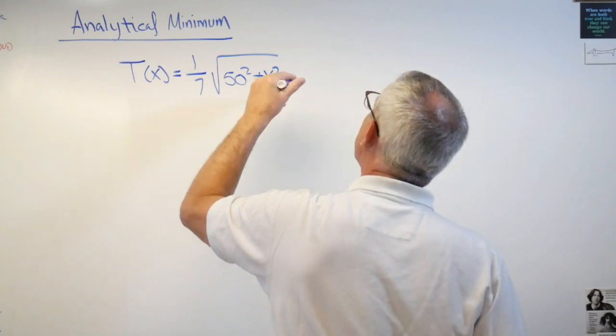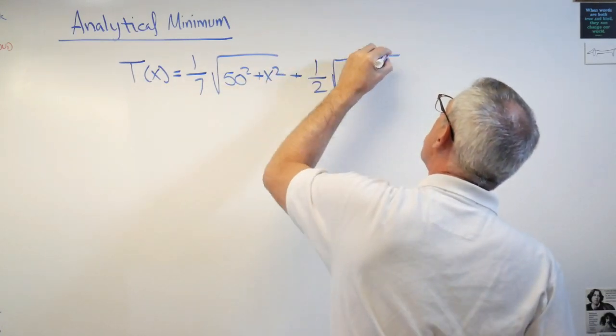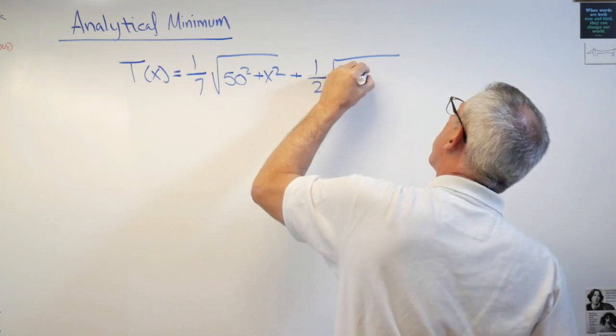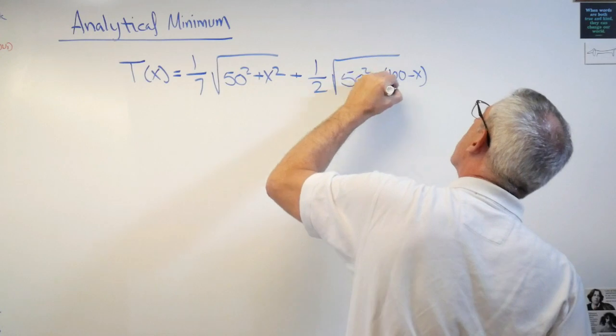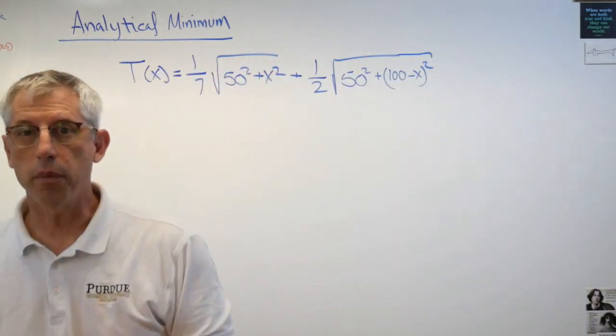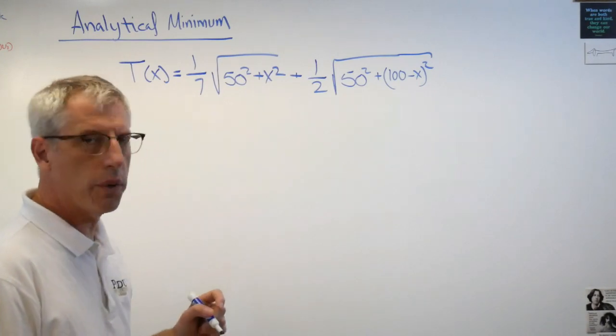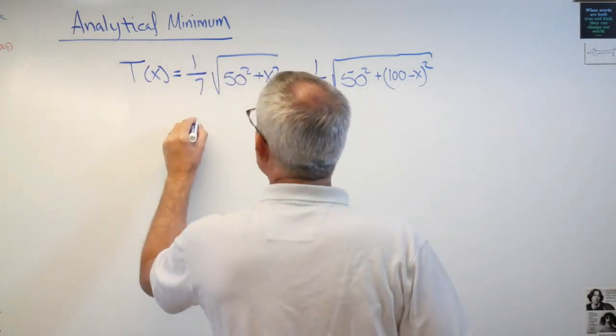There's the time that the lifeguard spends running across the sand, and there's the time she spends in the water getting to the swimmer. So x will be in meters and t time will be in seconds, and this was 87.21 I think. So let's draw a picture of this.